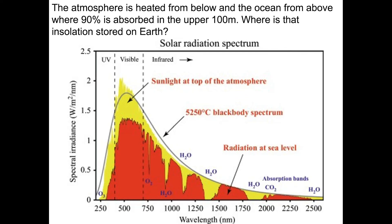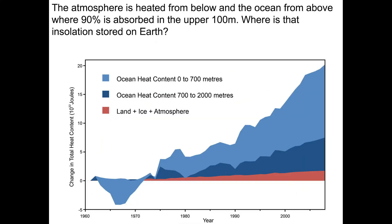Anyone who's gone snorkeling or scuba diving can tell you that when you look down a column of water, it gets dark — if you dive down 30 meters, most of the light goes away and you'll want to bring an auxiliary light. Once this water is warmed, most of the heat is absorbed in the upper portion. This means ocean heat content — the storage of this energy — is concentrated in the upper layers: divided between 0 to 700 meters and 700 to 2,000 meters depth. Most of the heat retained by the Earth from the sun is retained in the upper 700 meters of the ocean.